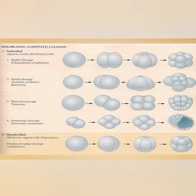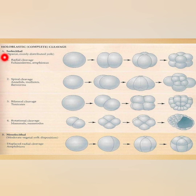Now let's look at the structural patterns in different cleavage types. Holoblastic cleavage is divided into isolecithal and mesolecithal cleavage, each with different patterns. Isolecithal cleavage may have radial, spiral, bilateral, or rotational cleavage patterns. The isolecithal egg has sparse, evenly distributed yolk, while mesolecithal egg has moderate vegetal yolk. Mesolecithal cleavage has a displaced radial cleavage pattern.